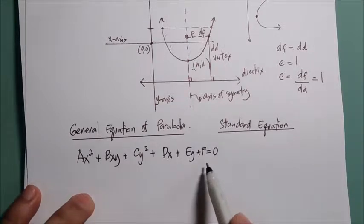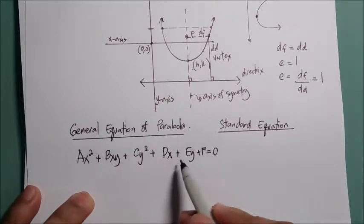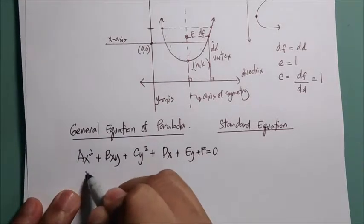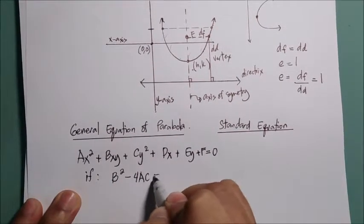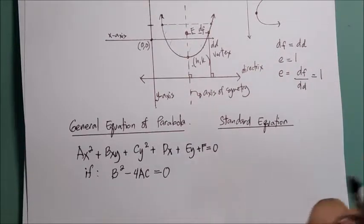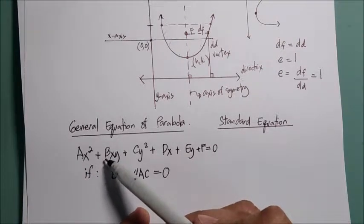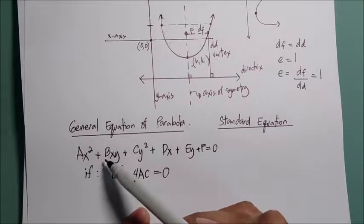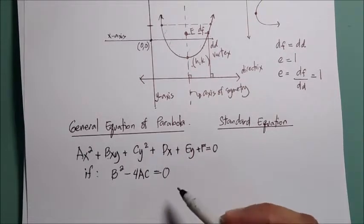Since a parabola is a conic section, you can determine that an equation is a parabola if b² − 4ac = 0. Similarly, for an ellipse or hyperbola, you can determine the conic type from this equation. If b is absent (b = 0), you can determine it is a parabola by checking if b² − 4ac equals zero.